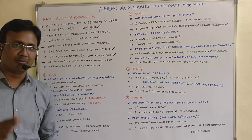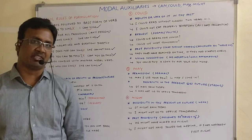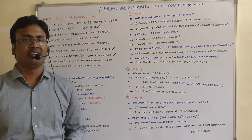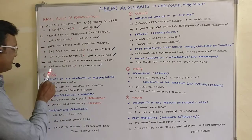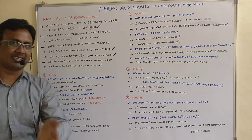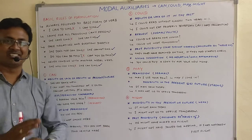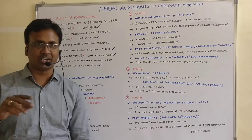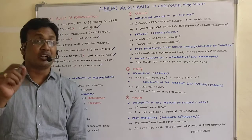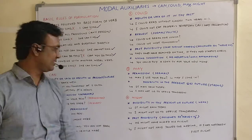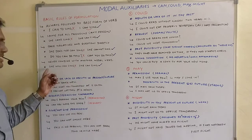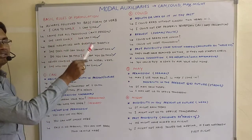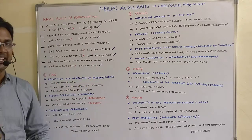Fourth rule: modal auxiliaries don't combine with any other modal auxiliaries. You will not have 'can' and 'could' in the same sentence. You will not have 'may' and 'might' in the same sentence. For example, 'she will can sing' looks odd and is wrong. 'She would can sing,' 'she may can sing' — all these are wrong. So they don't combine with each other. The point to note is not that you can't have more than one auxiliary, but specifically that modal auxiliaries do not combine with each other.